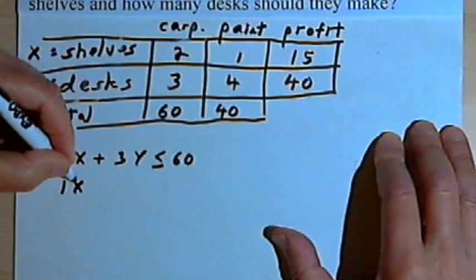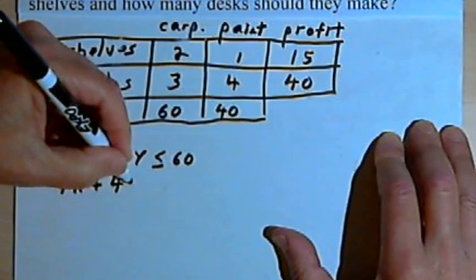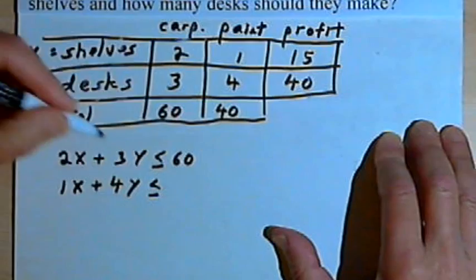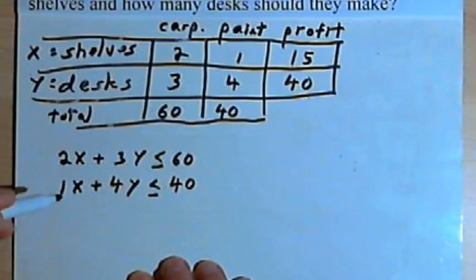For painting, it only takes 1 hour to paint a shelf, so we'll have 1x plus 4y, since it takes 4 hours to paint a desk, and that has to be less than or equal to 40.